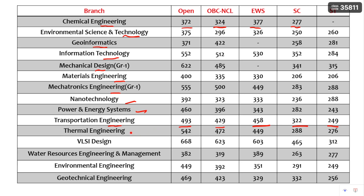Next is Thermal Engineering, which is a top branch in Mechanical Engineering — you can see those cutoffs. VLSI Design is one of the most in-demand branches; its cutoffs are Open: 668, OBC-NCL: 623, EWS: 603, SC: 465, HC: 312.